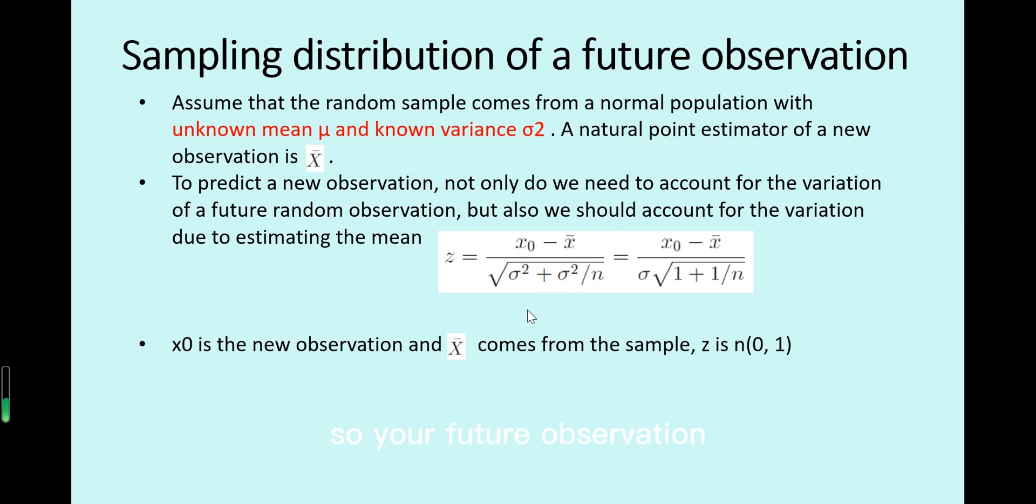So in the future observation you have the variance larger than single sample from the population. Because you have to add a part of the sample mean's variance here. Why? Because we do not know the true population mean value. We use the sample average in estimating the future observation.